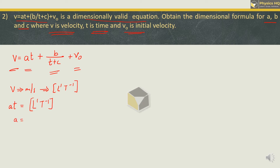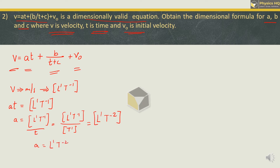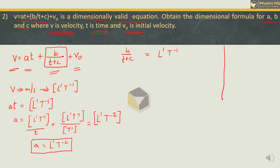Putting t on the other side: L¹T⁻¹ divided by T¹ gives L¹T⁻². So the dimension of a is L¹T⁻². Now let us look at the term b/(t + c). This term also has the same dimension L¹T⁻¹. Before solving, let us observe the denominator: it is t + c, where t is time and c is a variable whose dimension we need to find.